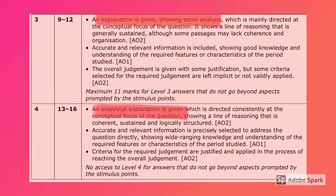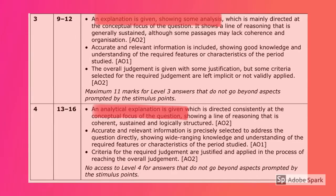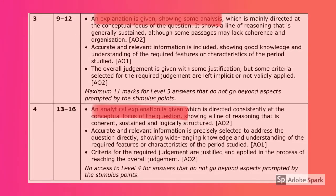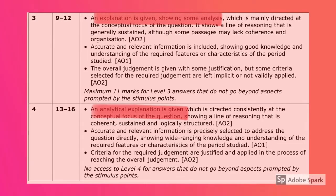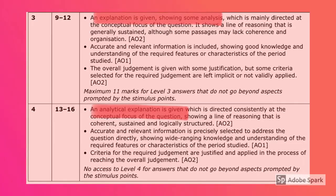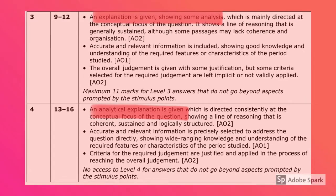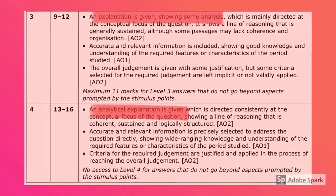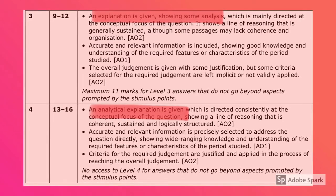So far we've written maybe one or two paragraphs and we're doing pretty well. We're definitely in band three — we've got relevant information, we've got analysis of the question, everything we've talked about is coherent and organised. But in order for you to gain full marks, which is band four — 13 to 16 — you must have a counter-argument. That's what's explained by an analytical explanation. You have to give an agree, a disagree, then conclude.